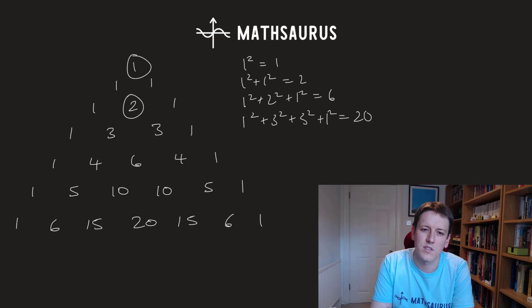1 squared plus 2 squared plus 1 squared that's the sum of this row squared that's 6. And then 1 squared plus 3 squared plus 3 squared plus 1 squared is 20. So summing the squares of this rows gives us this entry here.